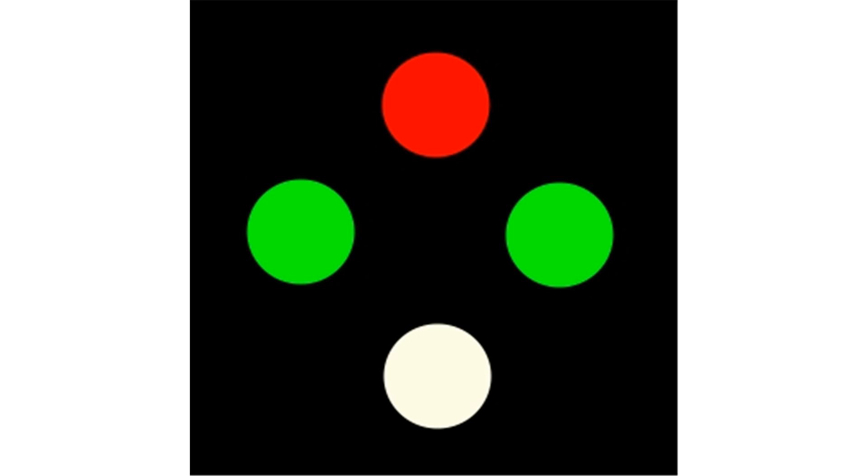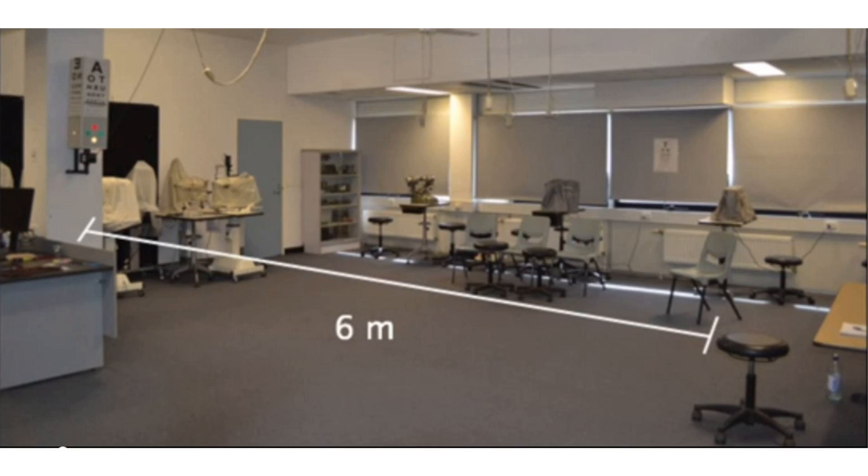The four lights are arranged in a diamond formation, with a red light at the top, two green lights at either side, and a white light at the bottom.